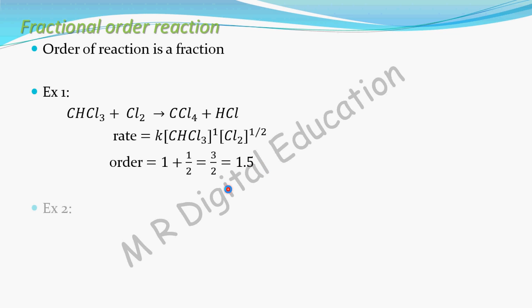So now order is sum of these two powers, that is 1 plus 1 by 2, which equals 3 by 2, that is equal to 1.5. So order is 1.5. See, 1.5 is a fraction number, so it is a fractional order reaction.